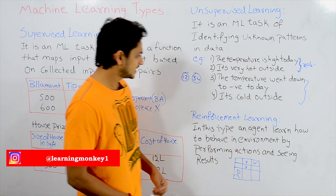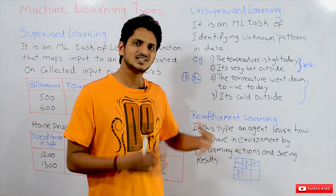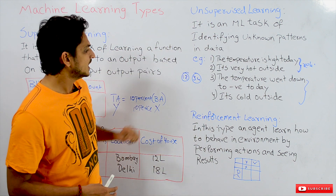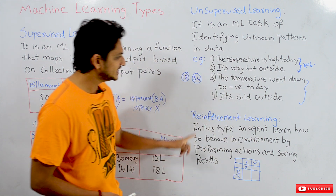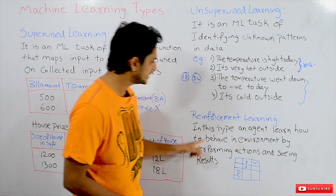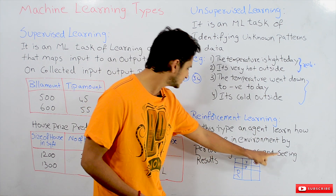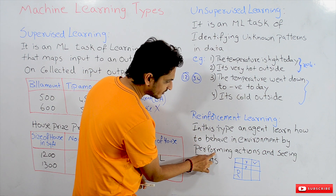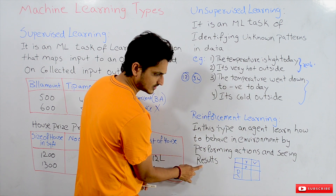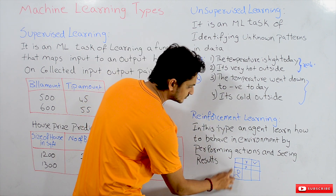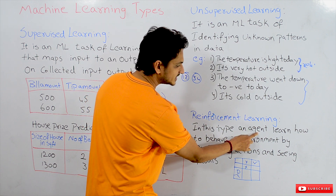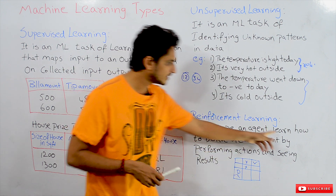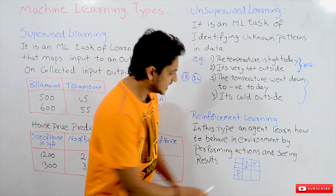Coming to our third type: reinforcement learning. This is a little different from supervised and unsupervised learning. The definition states: in this type, an agent learns how to behave in an environment by performing actions and seeing the results. Here, the agent is our ML algorithm — the machine learning algorithm has to learn how to behave in an environment.